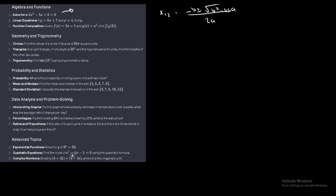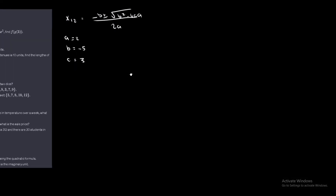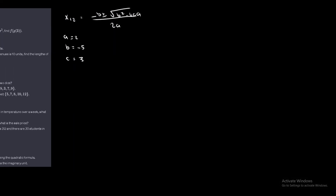We can then identify a. A is the first term, the coefficient in front of x squared, so this is the second degree term. So a is equal to 2. B is equal to negative 5. And then we have c, which is equal to 3. So now we can solve for x₁ and x₂. Negative b means negative of negative 5, so that becomes positive 5.